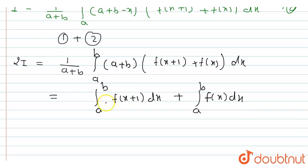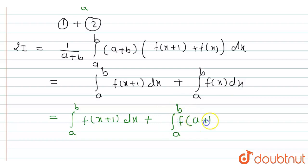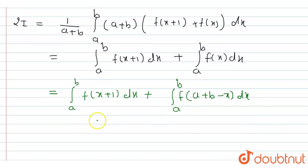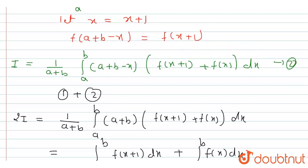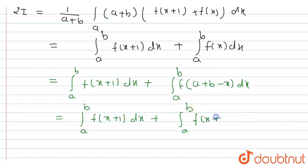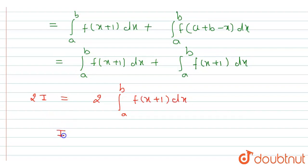Now ∫[a to b] f(x) dx can be rewritten using the property ∫[a to b] f(a+b-x) dx = ∫[a to b] f(x) dx. Since f(a+b-x) = f(x+1), we substitute to get ∫[a to b] f(x) dx = ∫[a to b] f(x+1) dx. Therefore 2I = 2·∫[a to b] f(x+1) dx, and dividing both sides by 2 gives I = ∫[a to b] f(x+1) dx.